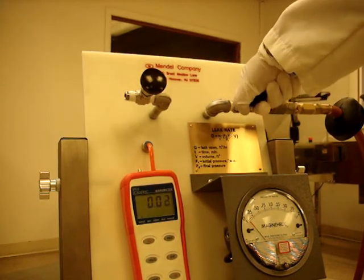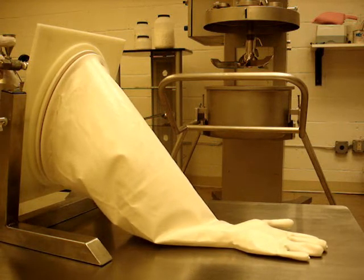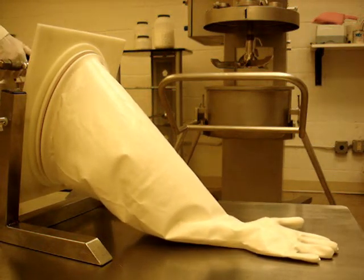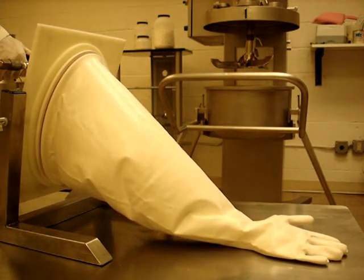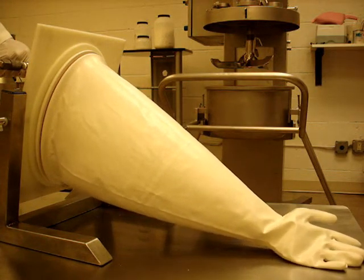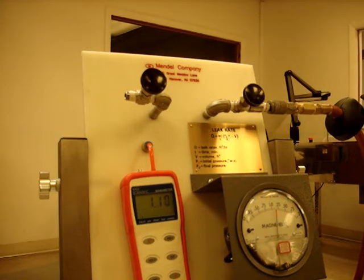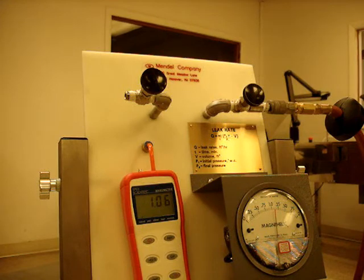Again, for this second glove, we are going to open up the inlet air valve and inflate the glove to a pressure of 1.25 inches of water column. As it inflates, you want to make sure nothing is around the glove in order to avoid it getting caught on anything. Now we close the valve and press the record button when it reaches 1 inch of water column.